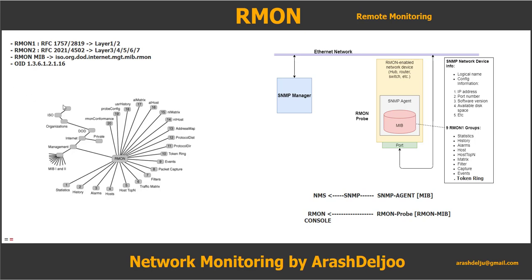In SNMP, we gather information related to one specific feature of the device and send it to the NMS. But in the RMON probe, we have information related to the traffic passing through the device, and we gather it, process it, and only when the RMON console needs or requests it do we send this information to the RMON console.